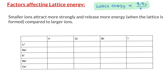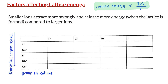Here I have an empty table of some cations and anions. Let us try to predict the lattice energies based on their sizes. We know that lithium, sodium, potassium, rubidium, and cesium are all in Group 1. Meaning, down the group, the atomic radius — or in this case, the ionic radius — increases.